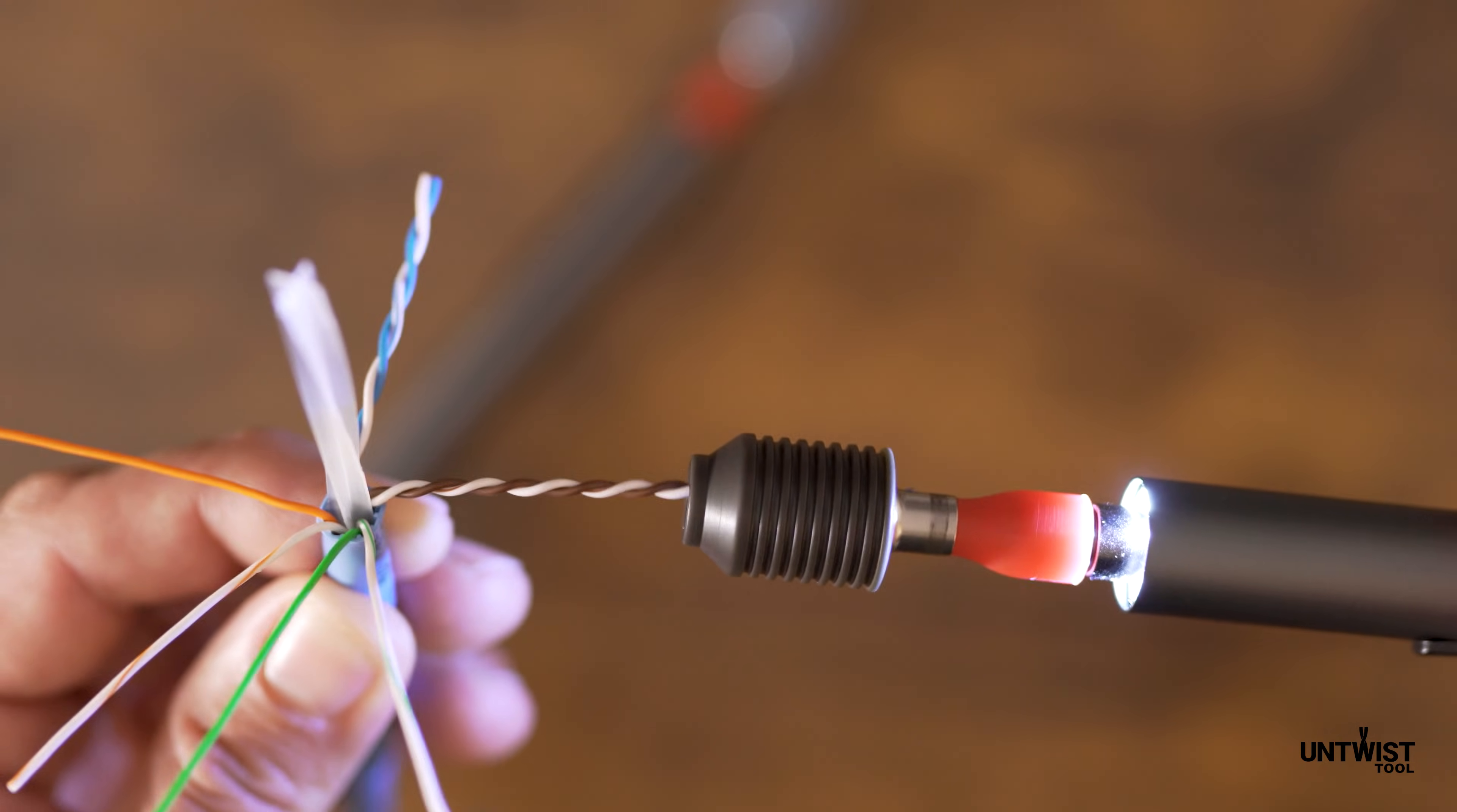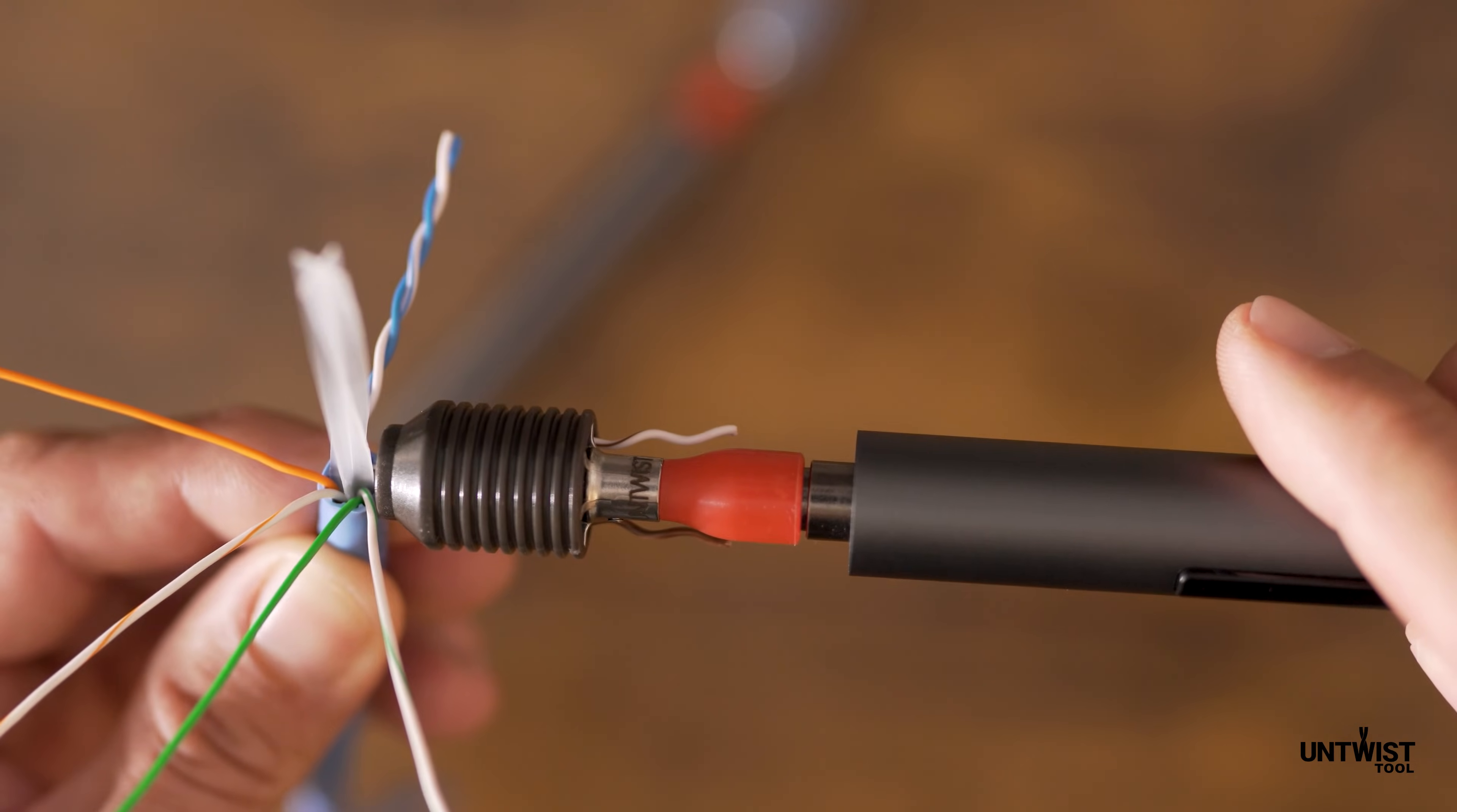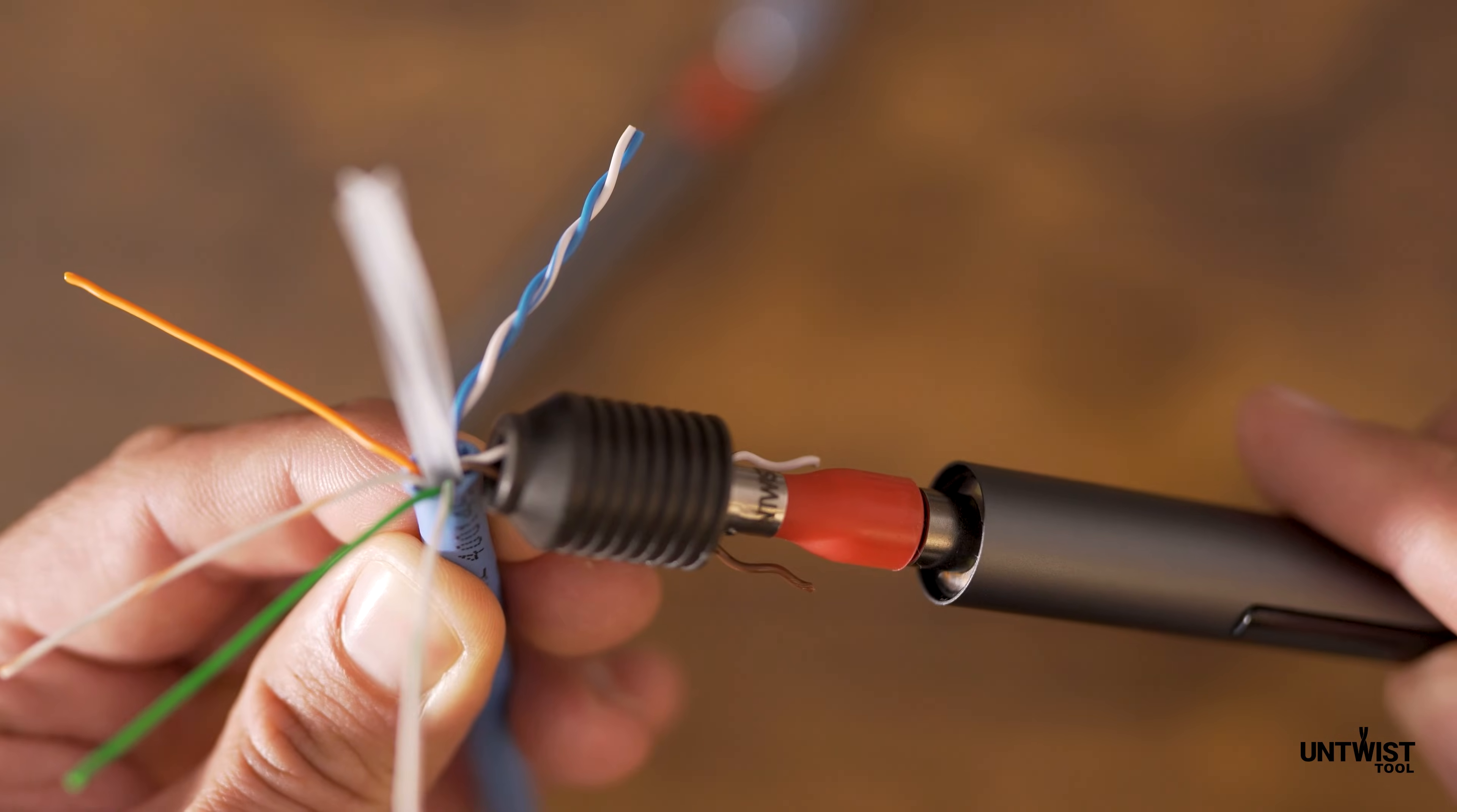Once the blades catch the conductors, the pairs will start to separate. At that time, you should apply some pressure and push down towards the bottom of the pairs.